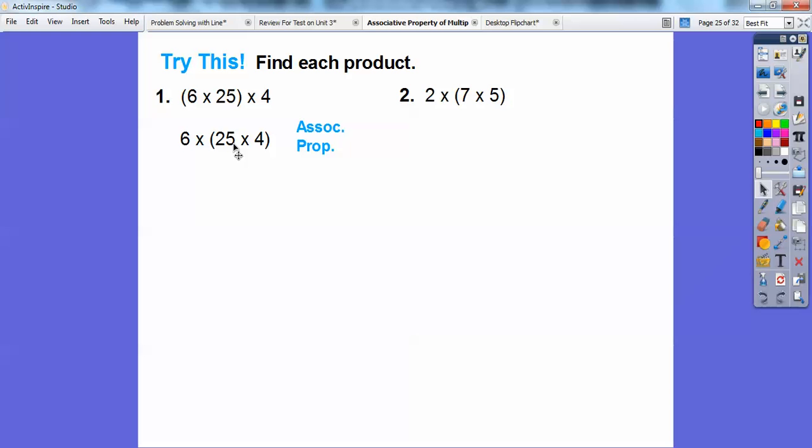Hopefully, you know that's a dollar. So 25 times 4 is 100. It's 100 pennies. So 25 times 4 is 100, and then we can do 6 times 1 is 6 and add two zeros. So 6 times 100 is 600. That's pretty slick. We'd get 600 if we'd multiply 6 times 25, and whatever that was, times 4, we'd get 600.